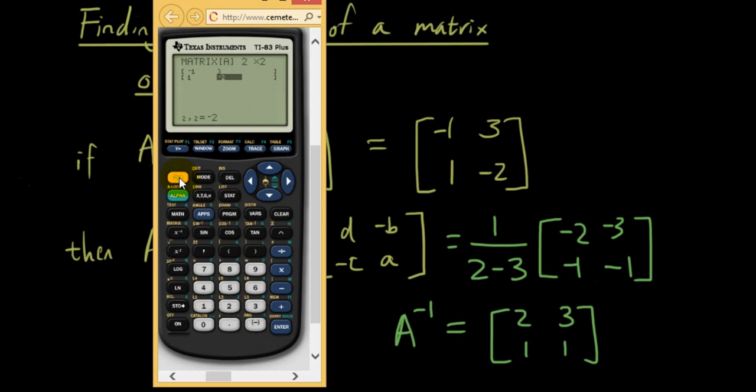Now I can press 2nd, quit, go back to the main menu. Then what you want to do is go to the matrix menu again, 2nd, matrix. Press enter over here to bring up that letter into the command prompt. Then press this button here again, which is the inverse button. Press enter and this will find the inverse of the matrix for you.